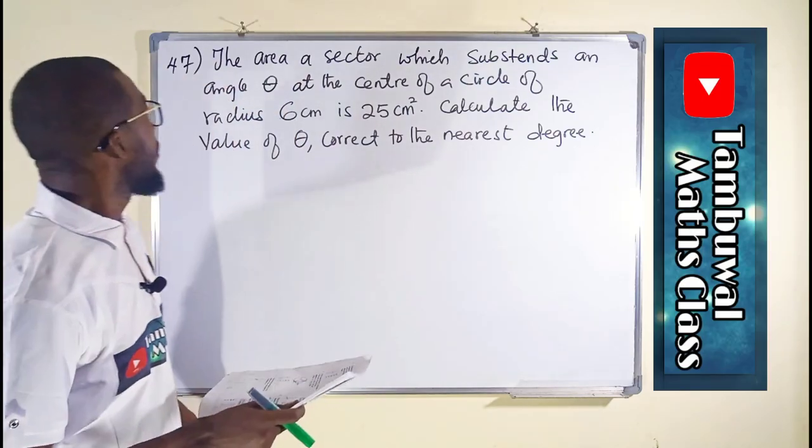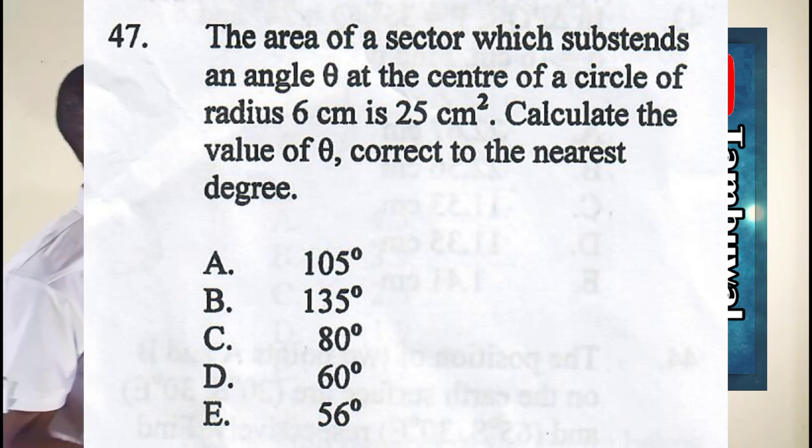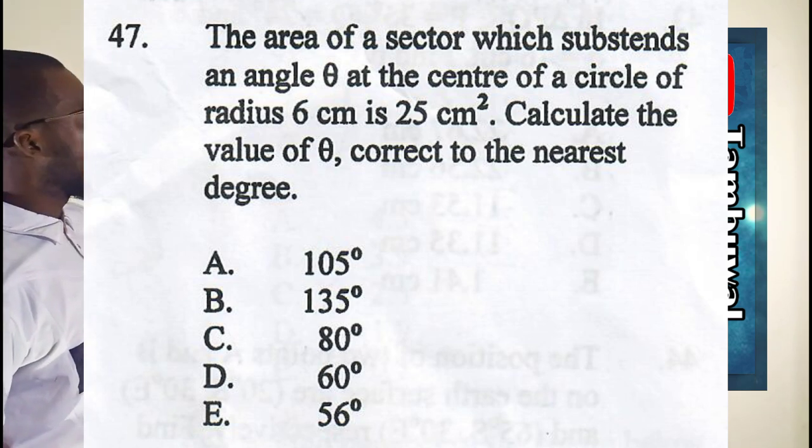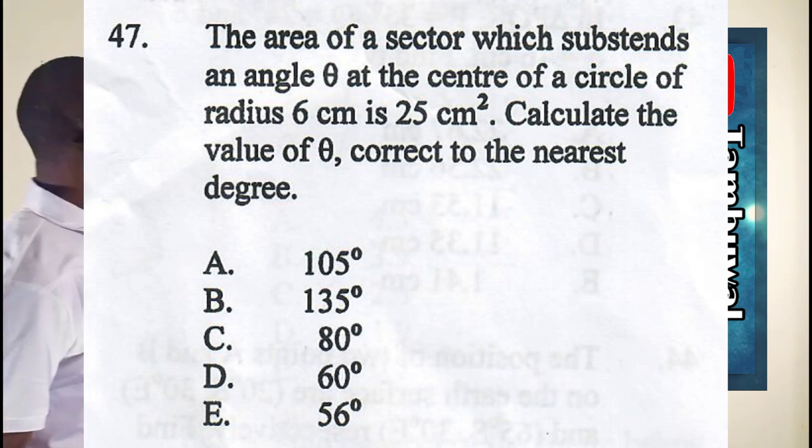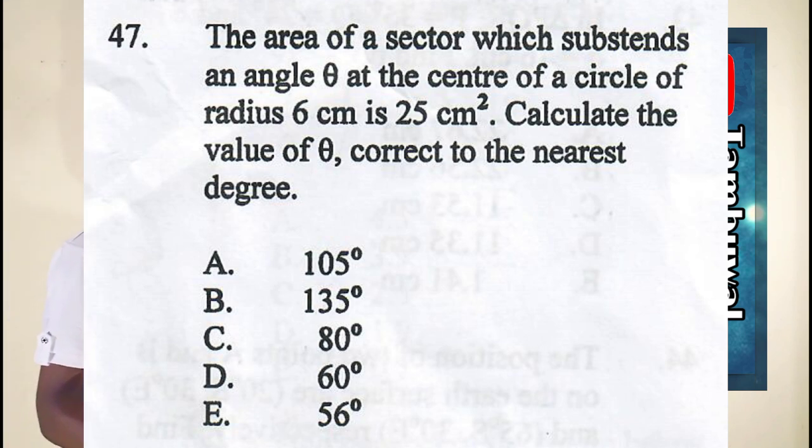Question number 47. The question says the area of a sector which subtends an angle theta at the center of a circle of radius 6 centimeters is 25 centimeters squared.